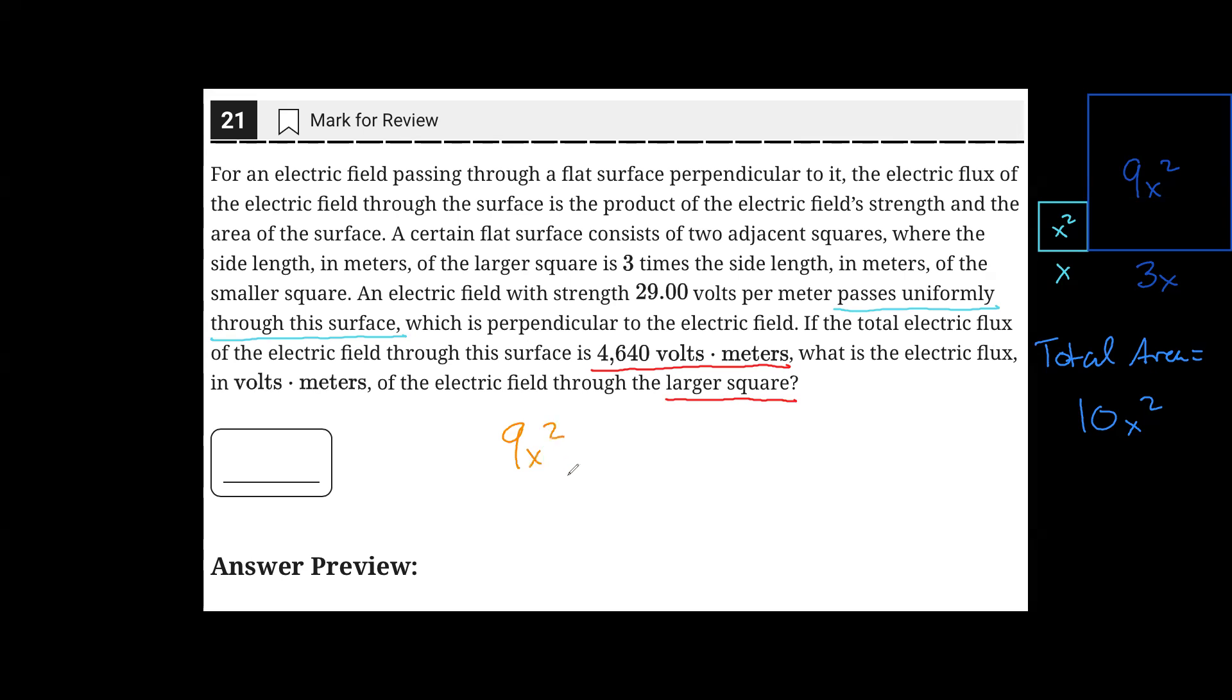So the area of the larger square over the area of the entire field equals—we don't know what the electric flux is, this is what we're trying to solve, so I'll give it a variable f. And we know that the total is 4640. Solving this proportion will yield that f equals 4176. That is the correct answer.